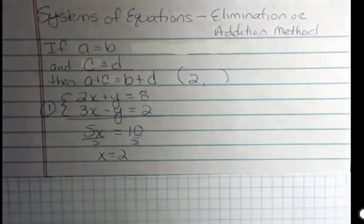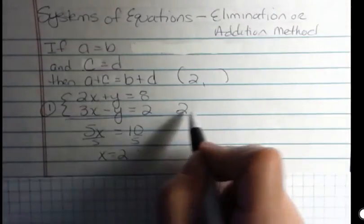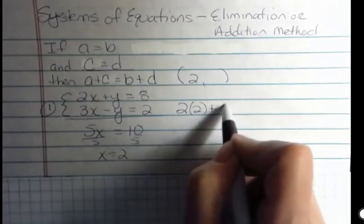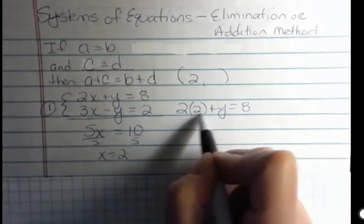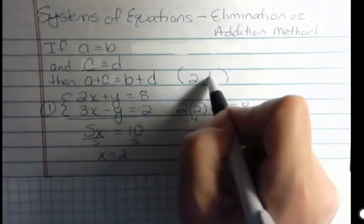So we still have to go back and find the other one. And you can plug into either one of these equations. I'm going to say 2 times 2 plus Y equals 8. 2 times 2 is 4, so I'm subtracting 4 from both sides and get Y equals 4.